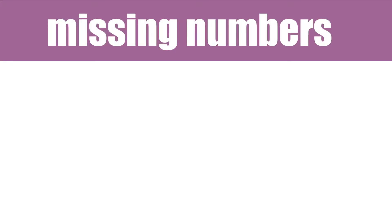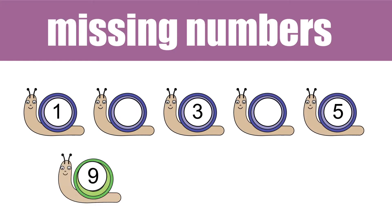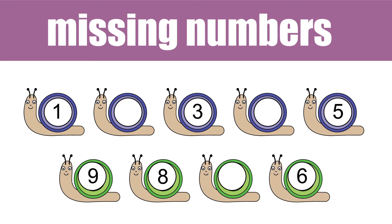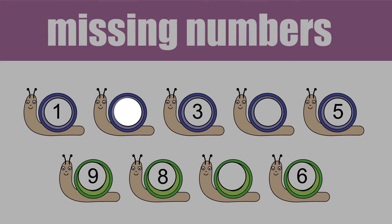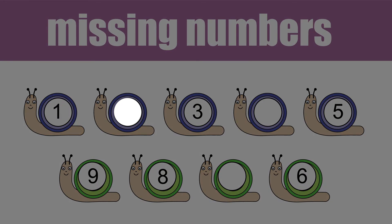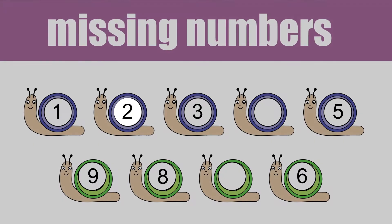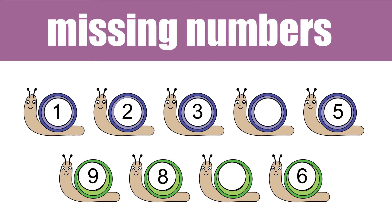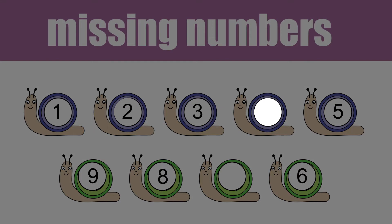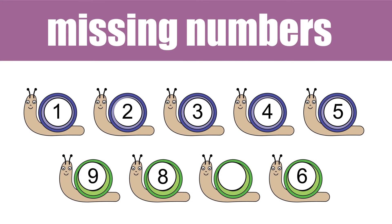Get ready for missing number puzzles. Can you complete these series? What comes between number 1 and 3? It's 2! What comes between 3 and 5? That's number 4! Well done!